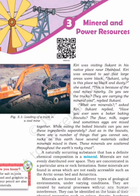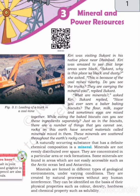Students, our next chapter of geography is mineral and power resources. There is a story I will explain. Kiri was visiting Sukan in his native place near Dhanbad, where she saw a large area covered with black dust. She asked Sukan why this place is so black and dusty. Sukan replied that this is because of the coal mines nearby.